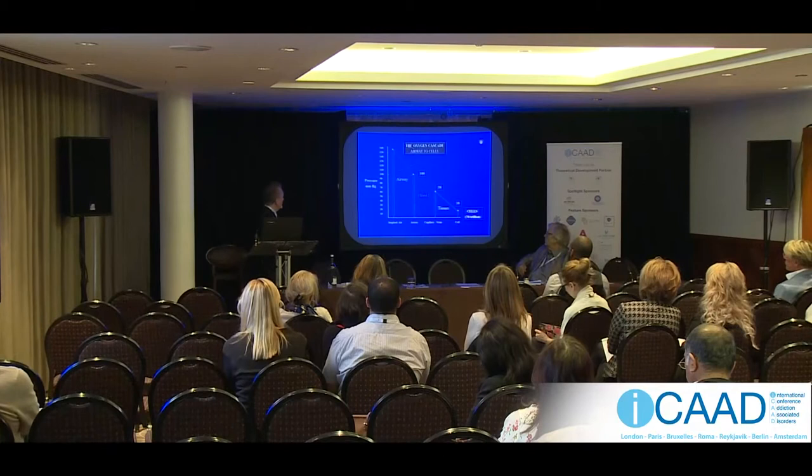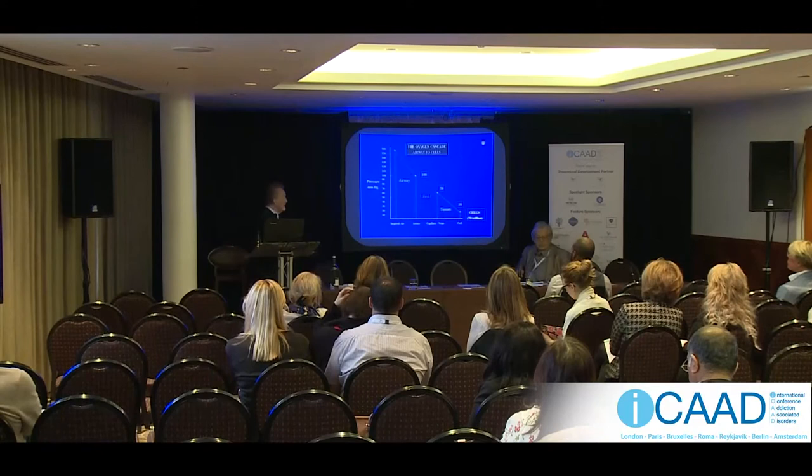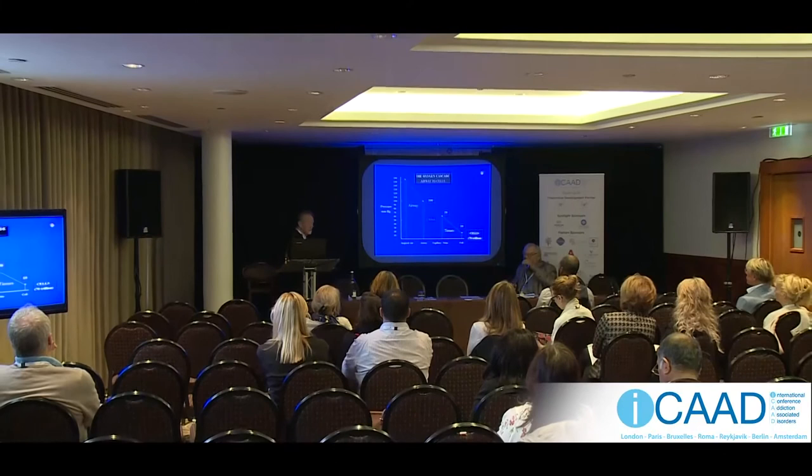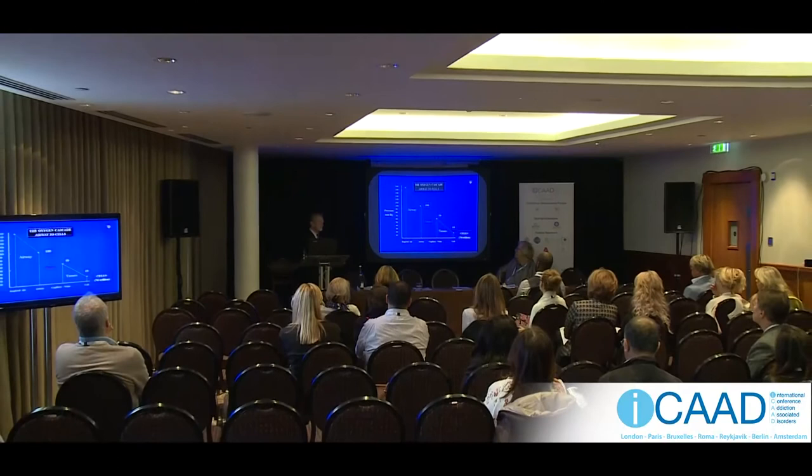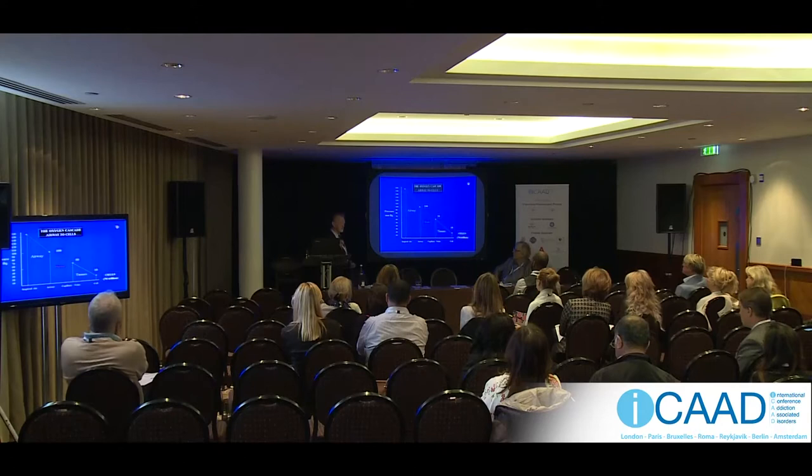If you introduce a resistance at any point in this cascade — for example, if you've got airways disease, chronic obstructive pulmonary disease, or if you're anaemic, or there's a problem in the transfer of oxygen in the tissues — then insufficient oxygen can actually reach cells. And it's only the oxygen that reaches the cells that's important.